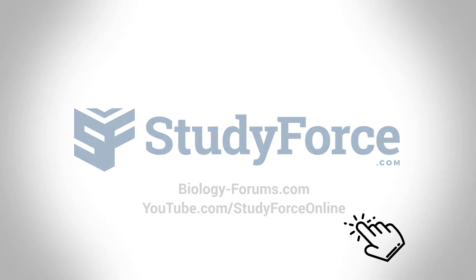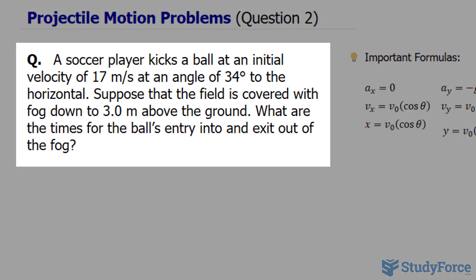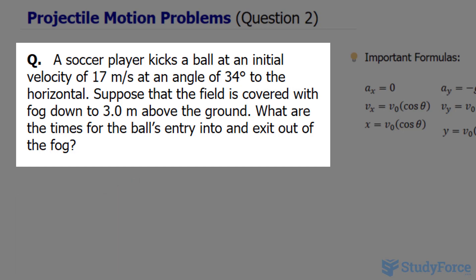Welcome back to question 2 of this series on projectile motion problems. This time the question reads: a soccer player kicks a ball at an initial velocity of 17 meters per second at an angle of 34 degrees to the horizontal. Suppose that the field is covered with fog down to 3.0 meters above the ground. What are the times for the ball's entry into and exit out of the fog?